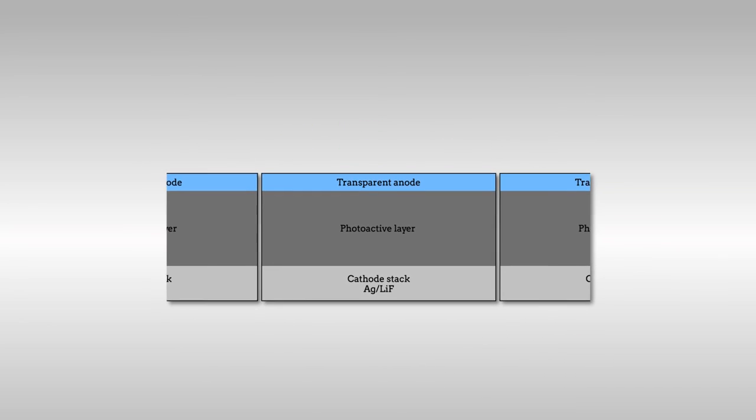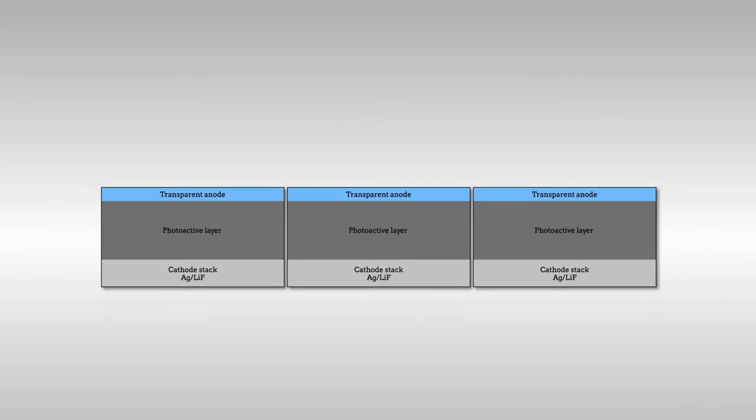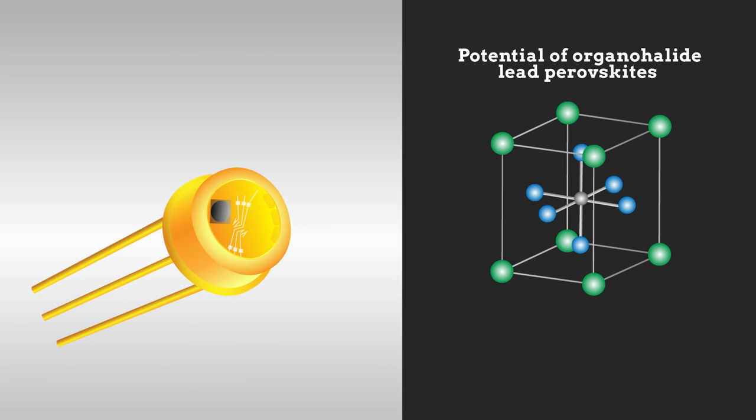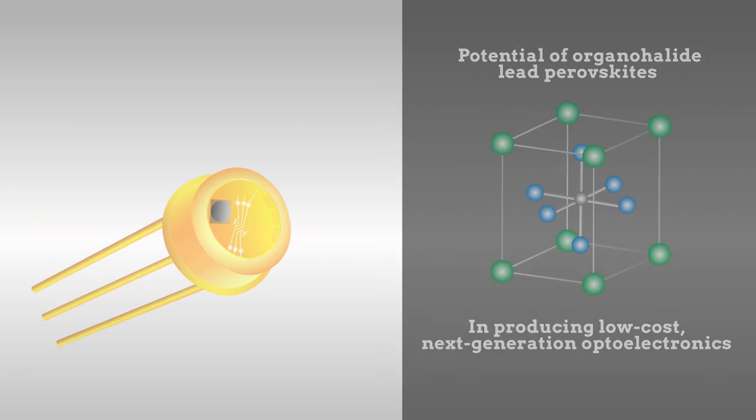The photodiodes represent a new breed of truly narrowband and filterless red, green, and blue photodetectors. Their performance rivals that of current commercial systems that do require filters, highlighting the potential of organohalide perovskites and similar materials in producing low-cost, next-generation optoelectronics.